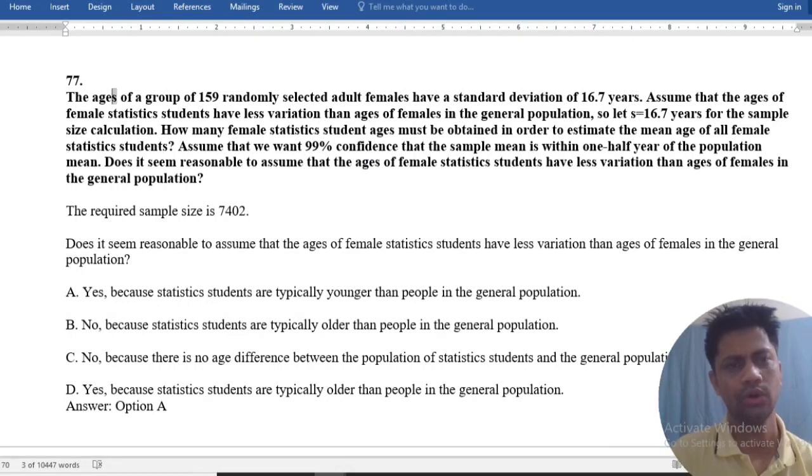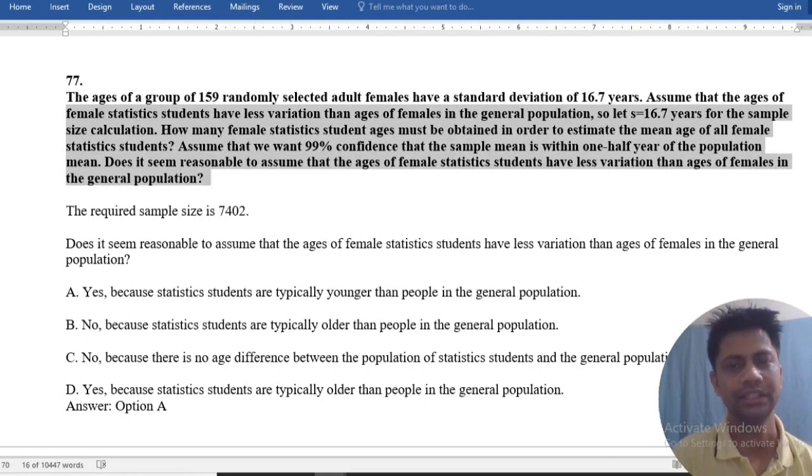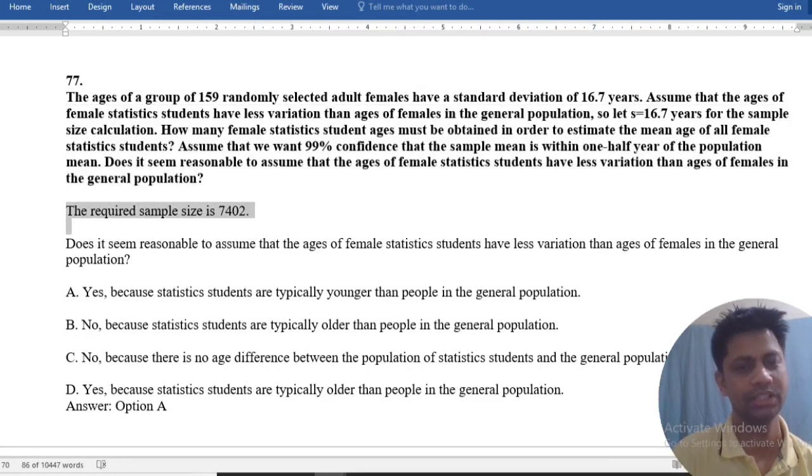The age of a group of 159 randomly selected adult females have a standard deviation of 16.7 years. Assume that the age of a female statistics student follows this distribution. Find the required sample size.